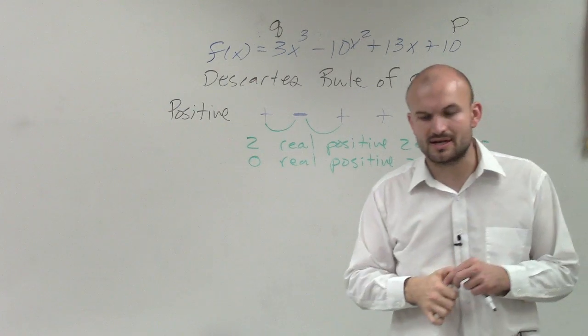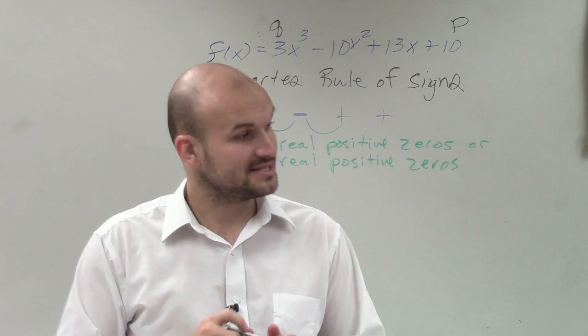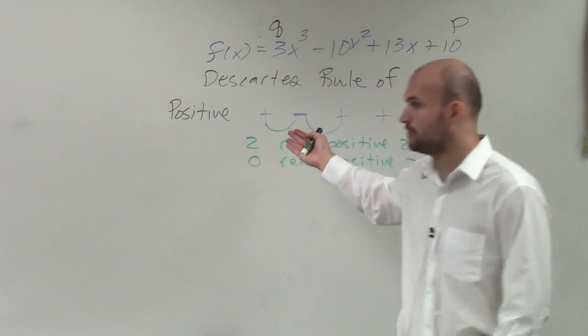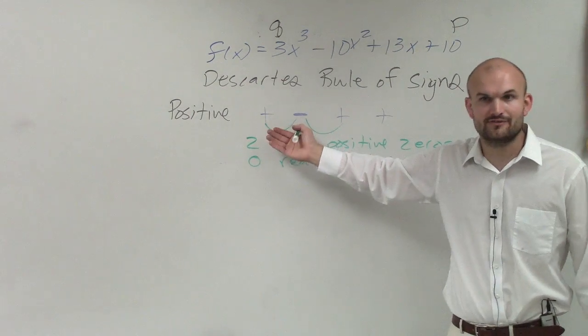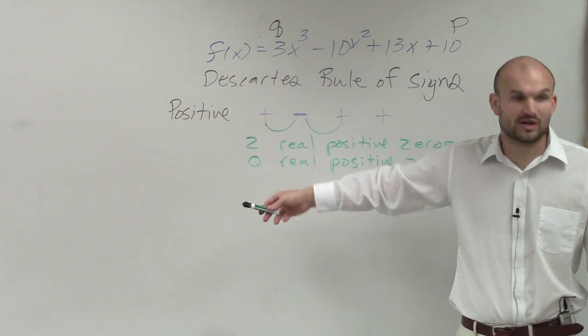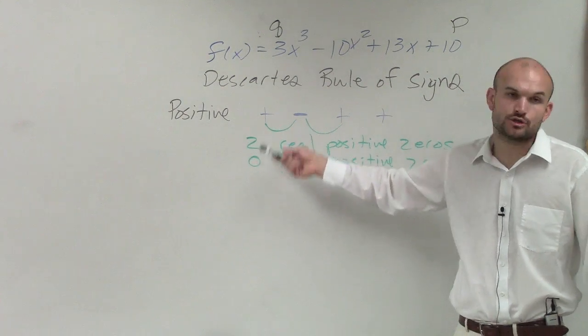Descartes' rule of signs states that the number of times you alternate from a sign is the number of real zeros minus an even number. So if I take 2 and subtract an even number, which would be 2, I would get zero. Therefore it's either 2 or it's zero. I'll show you how we will figure this out, but there's going to be two possibilities.